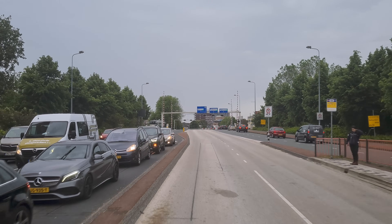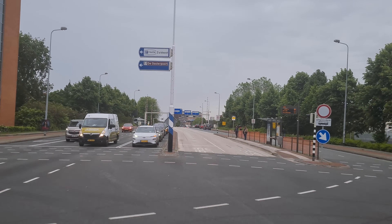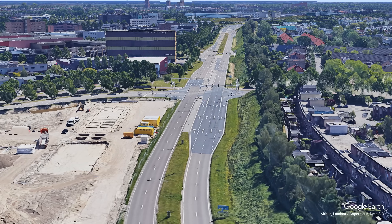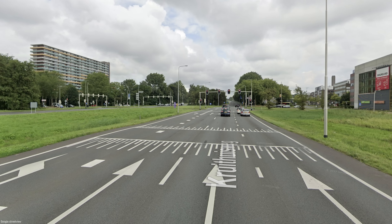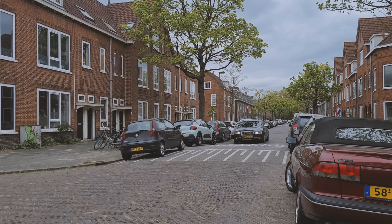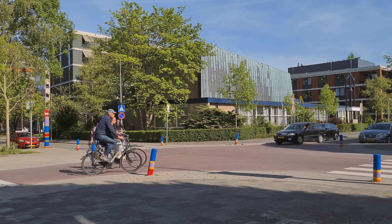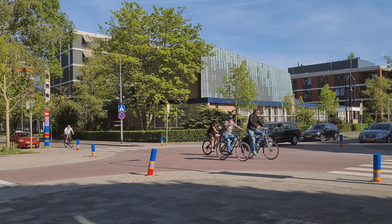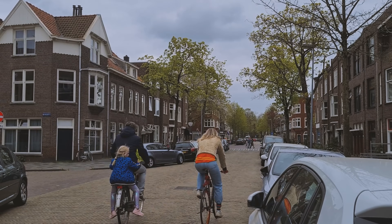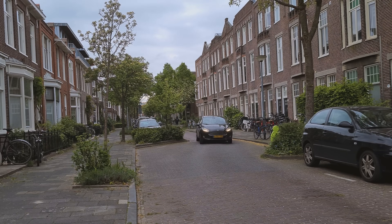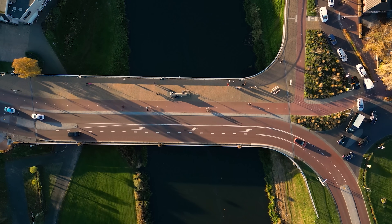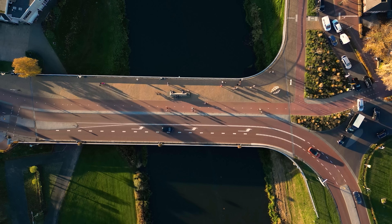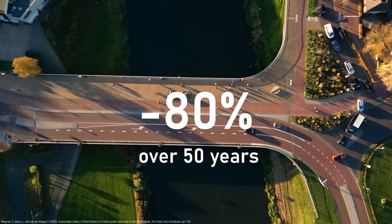It's not the number of lanes that determines the capacity of a road — it's the intersection — which is why the number of lanes is kept to a minimum, even on large arterial roads, and only increases just before reaching an intersection. Large arterial roads may even have speed bumps. However, speed bumps are typically installed on access roads. Access roads are residential streets that make up traffic-calmed residential areas where bicycles and cars can share the road, but this only works if there are adequate traffic-calming measures. Most importantly, access roads should be narrow to achieve lower speeds.